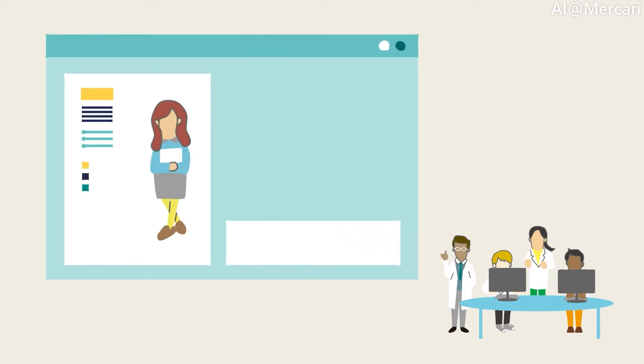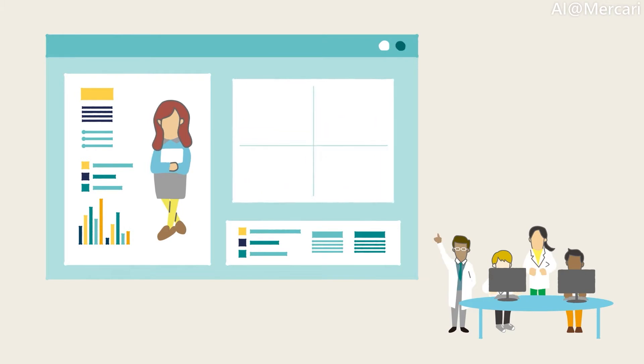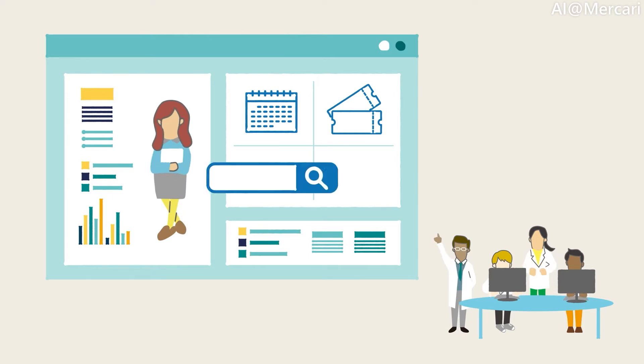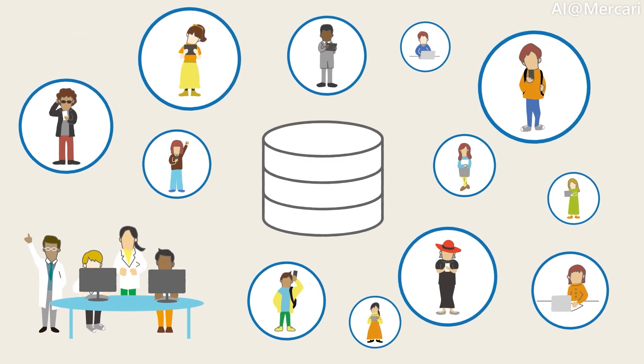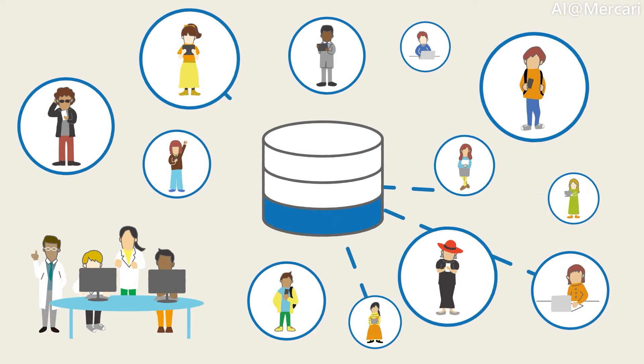We also use the user's historical information as features. For example, we use their actions such as when they last used our app, if the user has checked the coupons that are available to them, if the user has searched for items, if the user has purchased items, etc. The number of times that the user has performed these actions are also a good indicator of the user's characteristics.